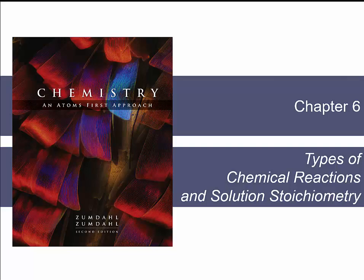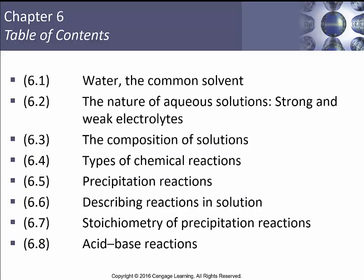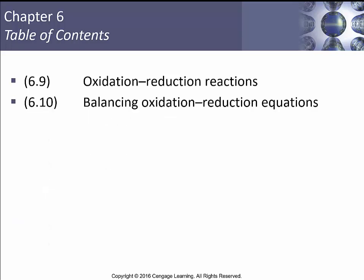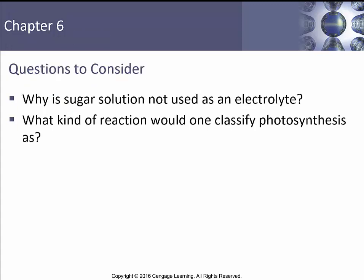Chapter 6: Types of Chemical Reactions and Solution Stoichiometry. We're going to talk about 6.1, water, the most common solvent. We'll discuss the nature of aqueous solutions and strong and weak electrolytes, the composition of solutions, different types of chemical reactions including precipitation reactions in 6.5, reactions in solution, stoichiometry of precipitation reactions, acid-base reactions, and oxidation-reduction reactions. We will skip balancing redox reaction equations, as we'll cover that better when we discuss electrochemistry in the next course.